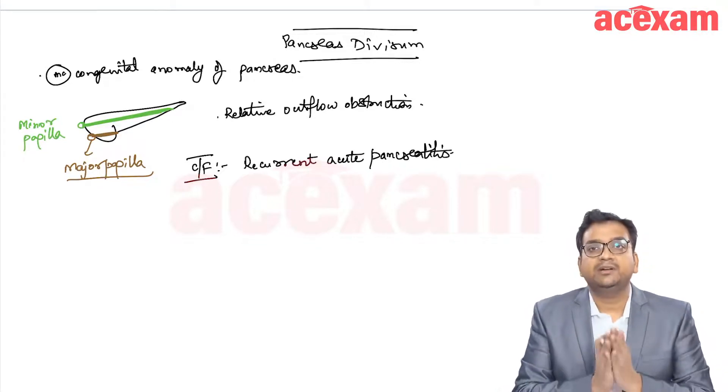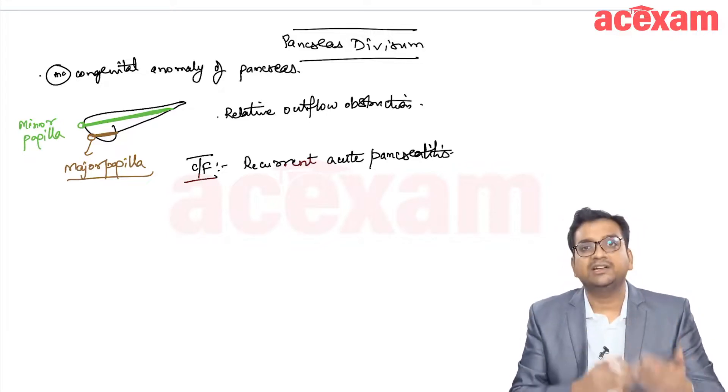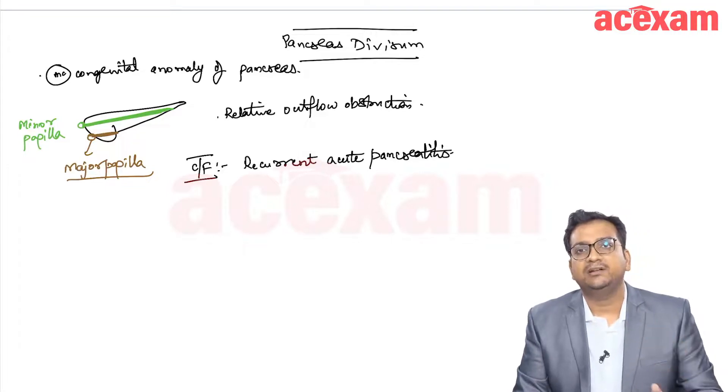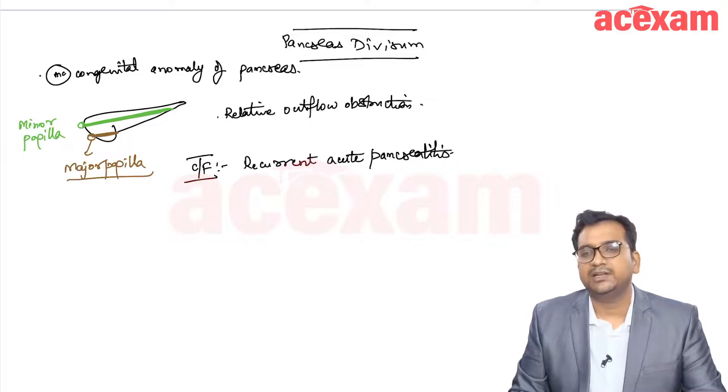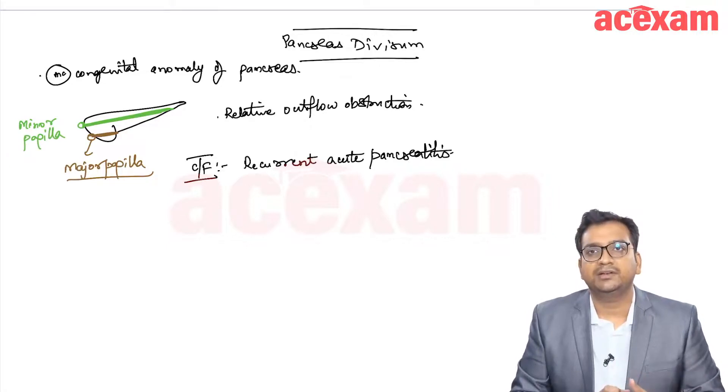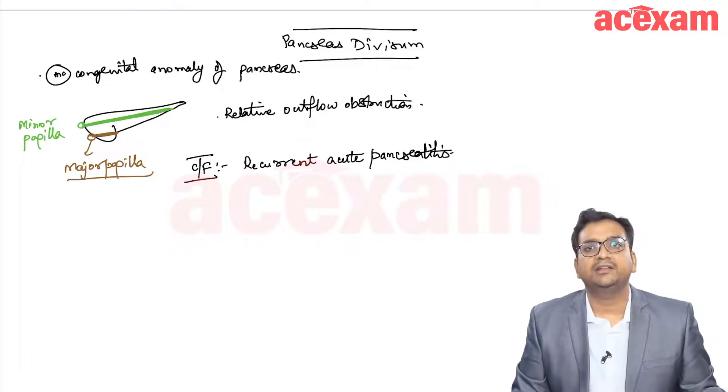It develops due to a developmental or congenital anomaly with failure of fusion of the duct of Santorini and duct of Wirsung. The majority of pancreatic fluid is drained via the minor papilla through the duct of Santorini.